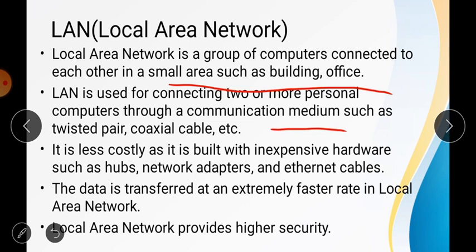LAN is a wired network covering a small area, making it a less costly network — you don't need expensive hardware. Because it is wired and covers less area, it is also a faster network. It provides high security since data moving through a wired connection cannot be leaked easily. In the early days the LAN range was approximately 10 kilometers, though nowadays it can reach up to 50 kilometers.